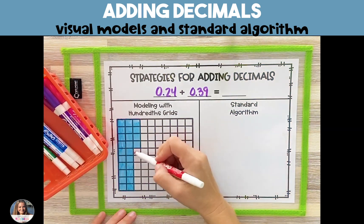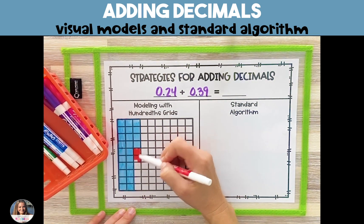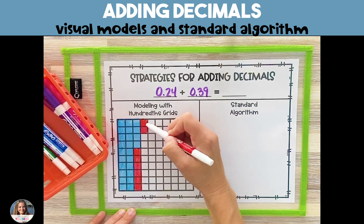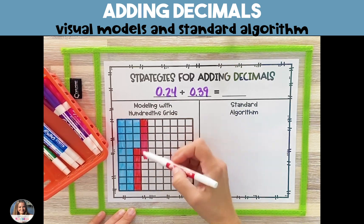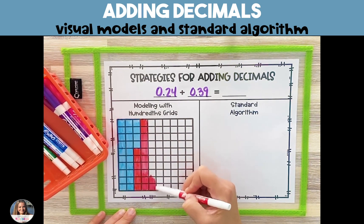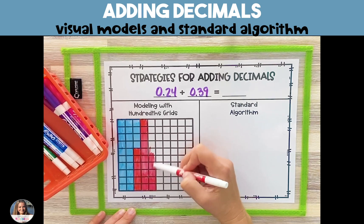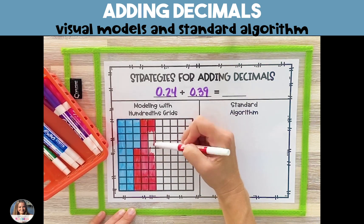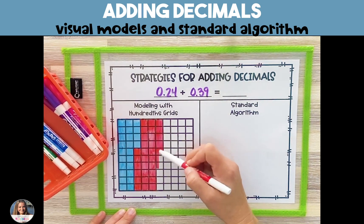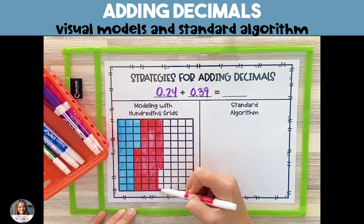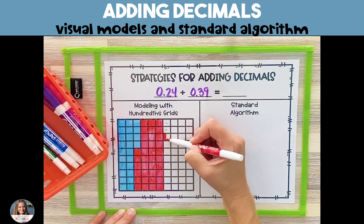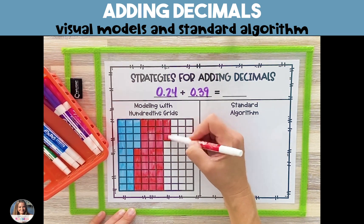Next, we're going to represent 39 hundredths by shading in the remainder of the third column, which contains six squares, or six hundredths. Then we'll shade in three additional columns. We now have 36 hundredths, and we'll need three more of the next column.